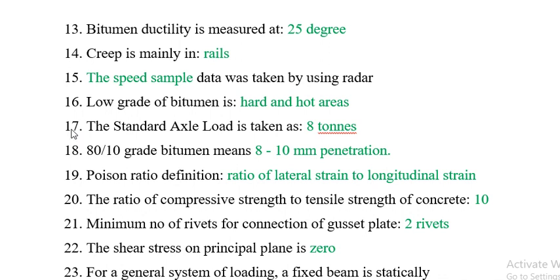Question 17: The standard axle load is taken as 8 tons. Question 18: The 80/10 grade bitumen means 8 to 10 mm penetration. Question 19: Poisson's ratio is defined as the ratio of lateral strain to longitudinal strain.